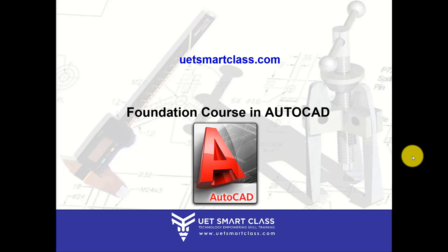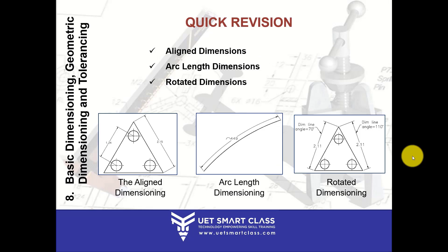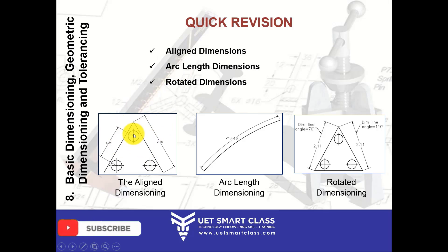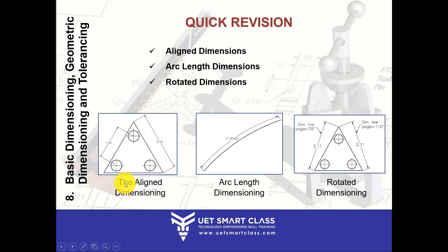Hello students, welcome back to the new session. Let's start with the preparation. In the last class, I told you three things. One, line dimensioning. For distance, for objects other than the horizontal and vertical straight lines, you can use line dimensions for lines at angles or for a distance — for example, the distance between two circles. You can specify the accurate distance between two points using the line dimension tool.